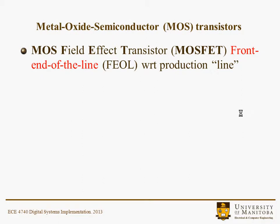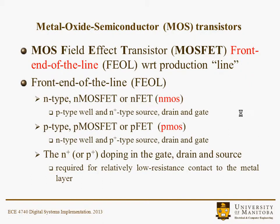The MOS transistor is a MOS field effect transistor, created at the front end of the line — sometimes called the FEOL. The NMOSFET, or NFET, which I'll call the NMOS device, has a P-type well, N-plus type source and drain, and the gate is also doped N-plus. The PMOSFET, or PFET, which I'll call the PMOS device, has an N-type well with P-plus type source, drain, and gate. The N-plus and P-plus doping in the drain, gate, and source are required for relatively low resistance, almost metal-like properties; otherwise they would be very resistive.